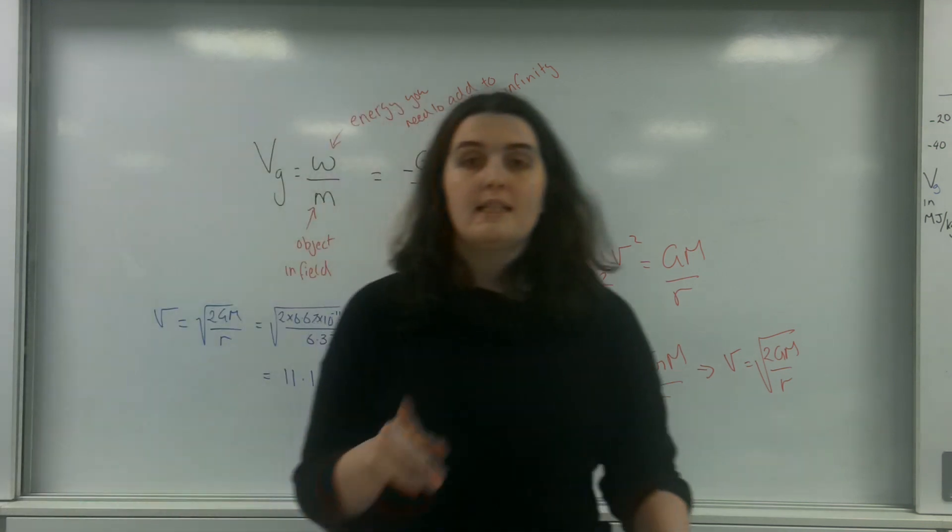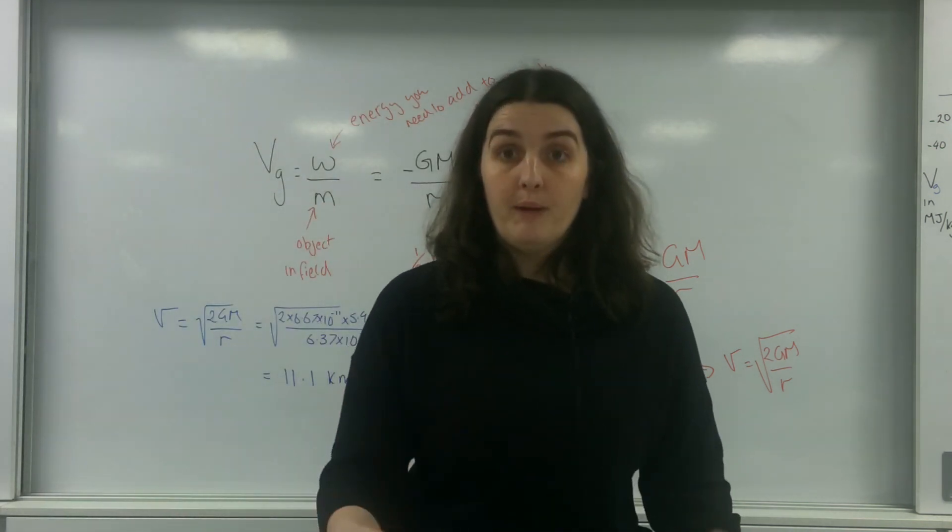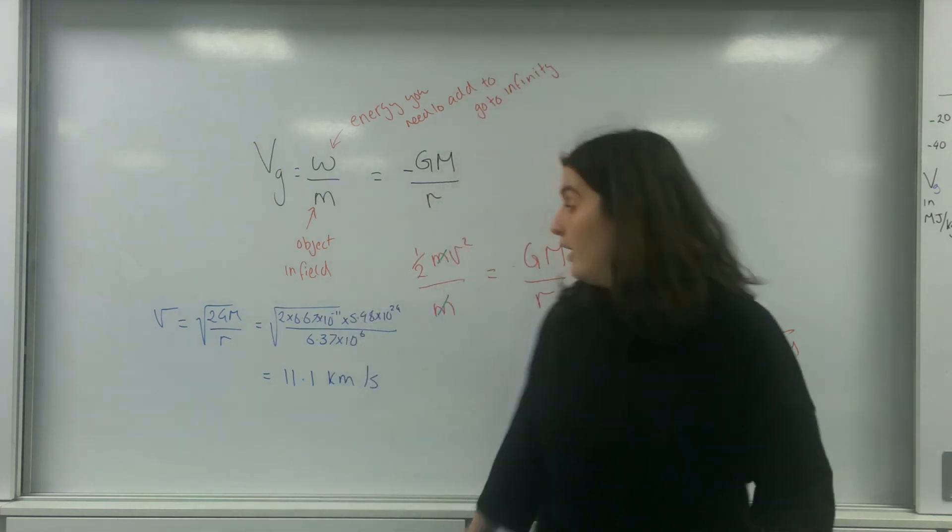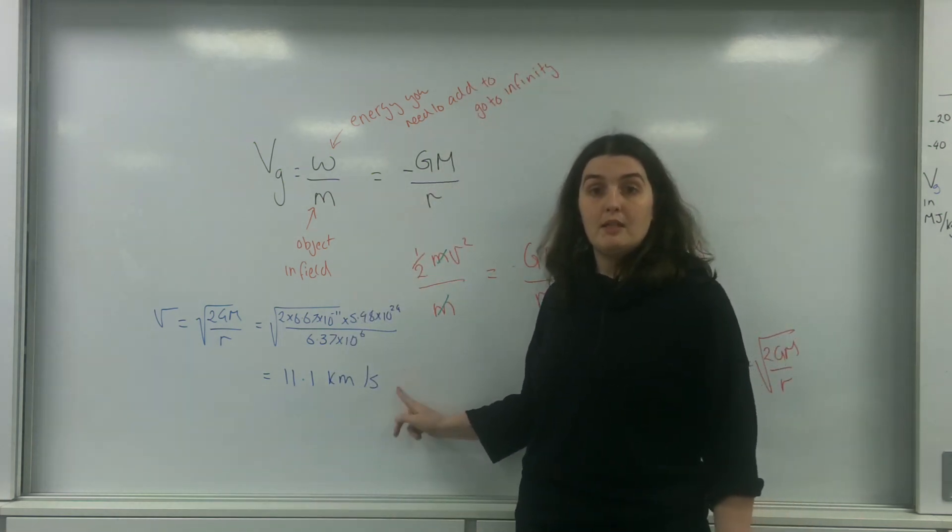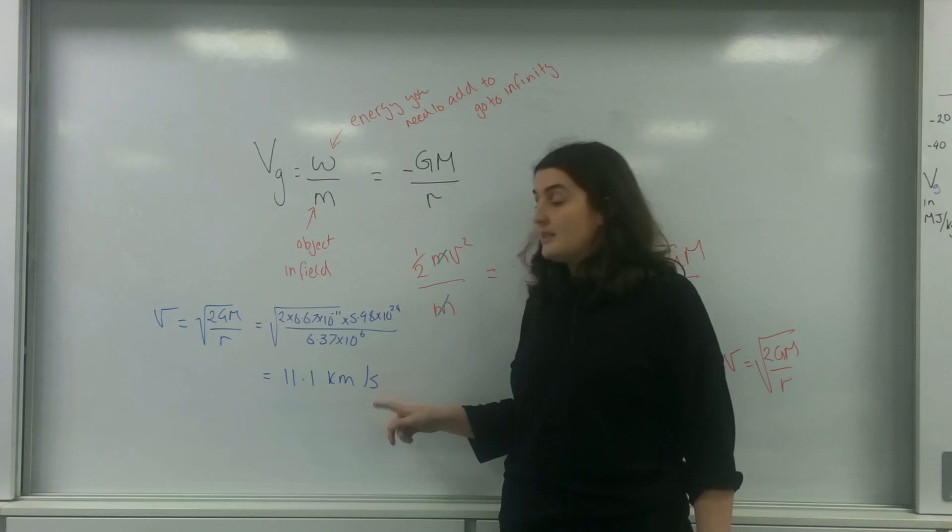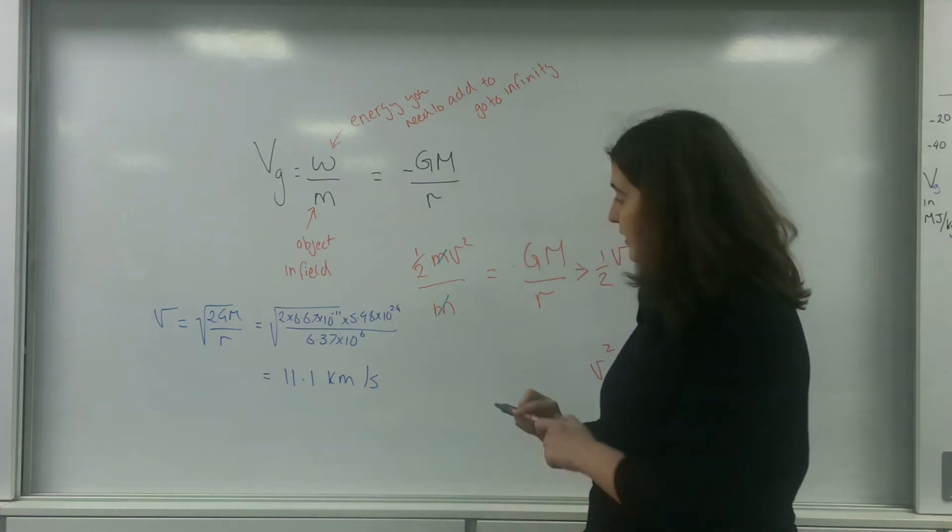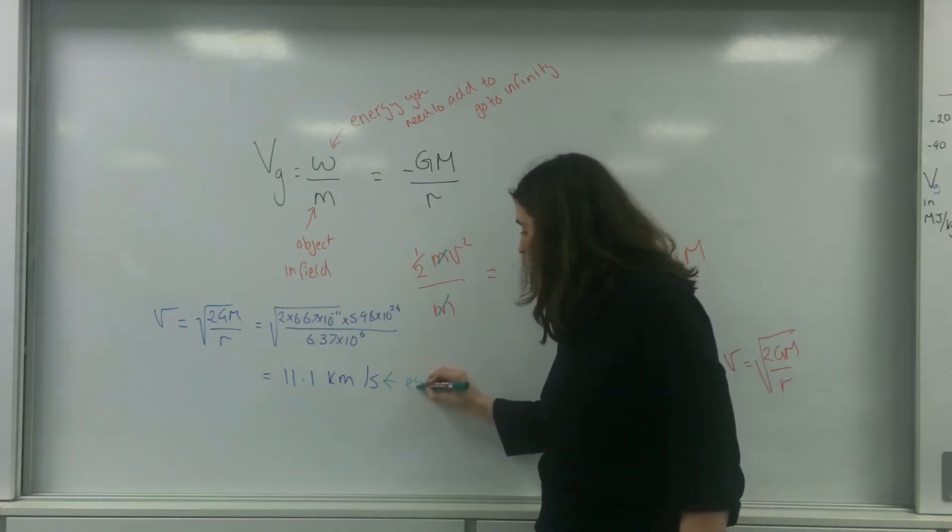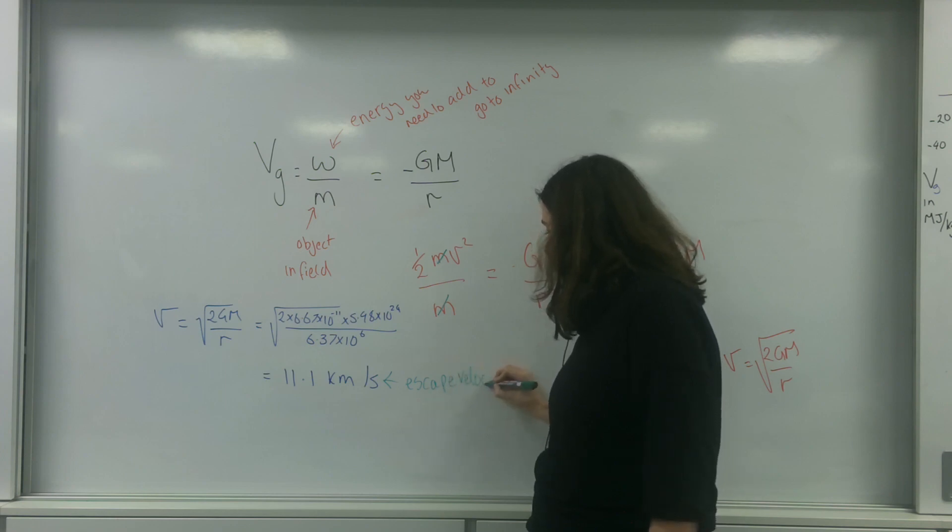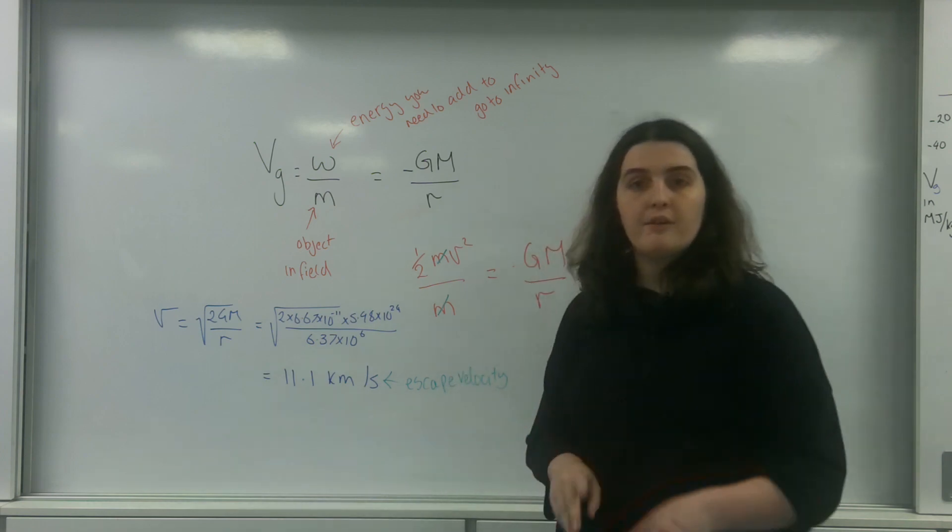So if you wanted to leave the Earth's orbit from the surface of the Earth, that is the speed that you would need to be going. This is the escape velocity at the surface of the Earth.